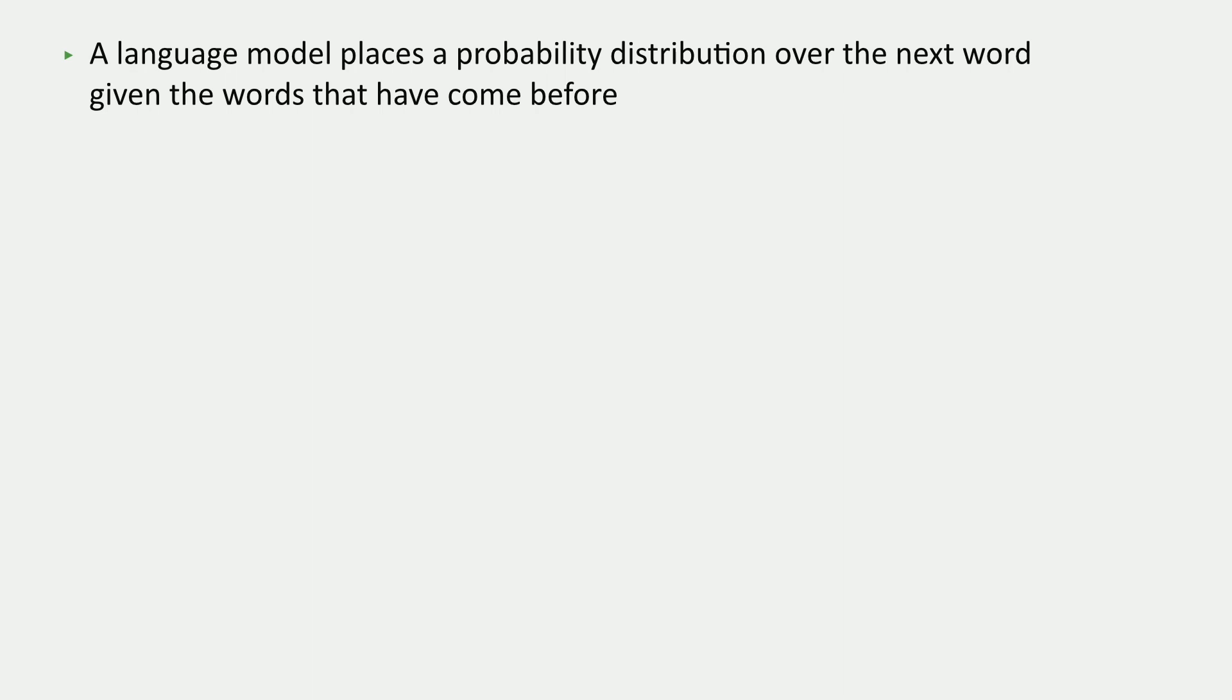And these models, again, place distributions over the next word given words that came before. And we're not going to look at how ChatGPT does this. We'll talk about this very briefly a little bit later.